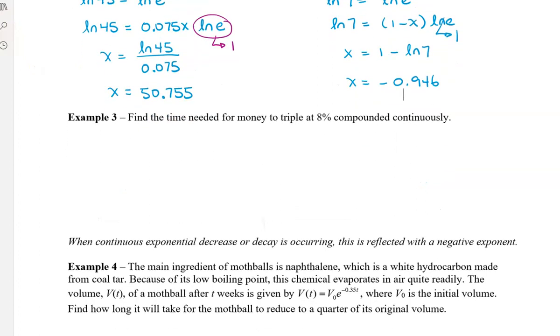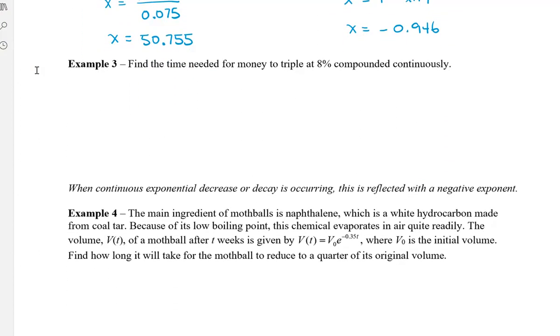Let's take a look at a couple of word problems. So this first one says, find the time needed for money to triple at 8% compounded continuously. So we know that we're going to use the formula a equals a naught times e to the kt.